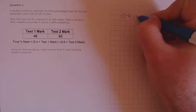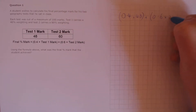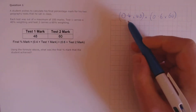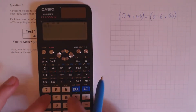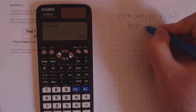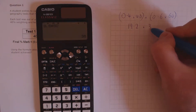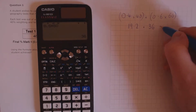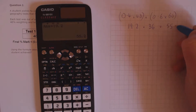So, we have 0.4 times 48 plus 0.6 times 60. 0.4 times 48 is 19.2, and 0.6 times 60 is 36. Finally, we just need to add those together to get our final percentage score, which is 55.2.